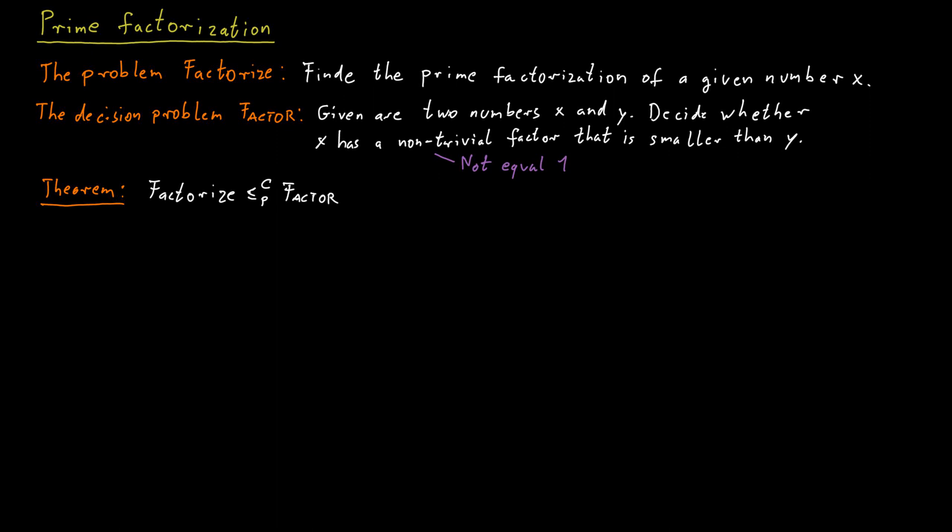This is not very difficult. We just need a simple trick. For a number x, we can find the smallest non-trivial factor in polynomial time if we have access to an oracle for the language factor.